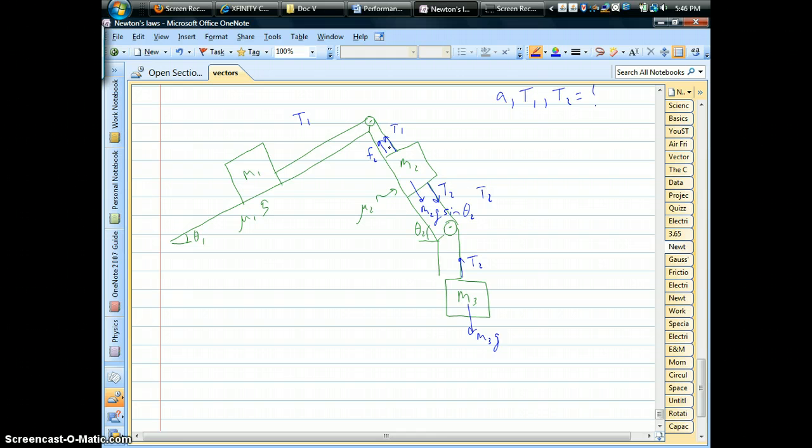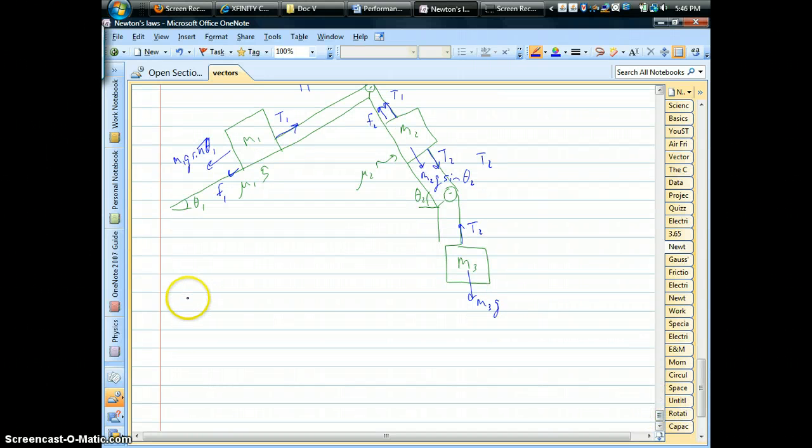Okay. Those are the four forces that would affect the motion for M2. Now M1, we've got tension one trying to pull it uphill. We've got a piece of gravity, M1G sine of theta one. And we've got a friction force there as well, trying to slow it down. Okay. So those are all the relevant forces. It gets messy in a hurry. The more objects you have, the more forces you have, of course.